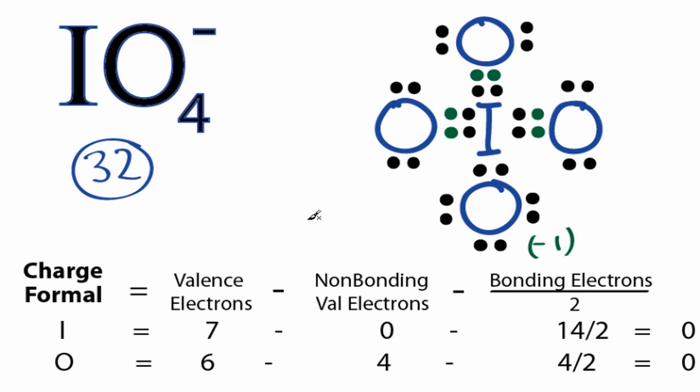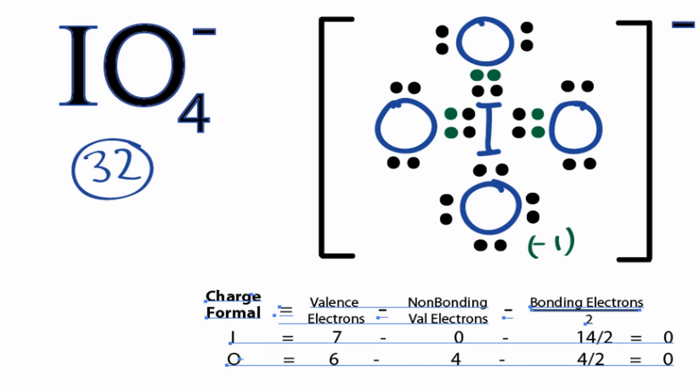So with these formal charges closer to 0, this is a much better structure for IO4 minus. Finally, since it is an ion, we do need to put brackets around it and the negative sign there. So this is the best Lewis structure for IO4 minus. And this is Dr. B. Thanks for watching.